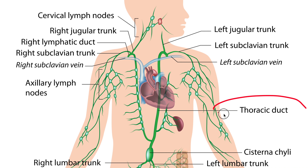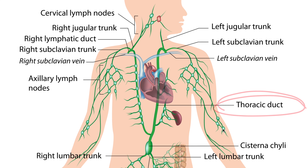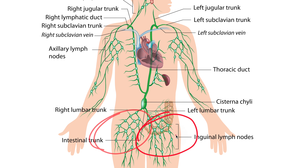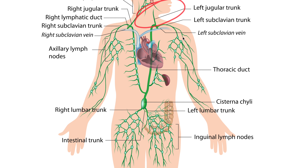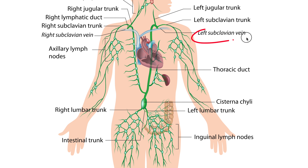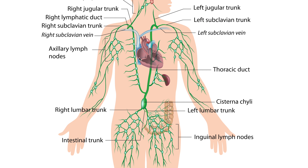Now let's take a look at the thoracic duct. The thoracic duct drains the rest of the body — the inguinal lymph nodes on both the right and left side, and the left side of the head and neck as well as the left arm. The thoracic duct then runs up and drains into the left subclavian vein, where it drains back into the heart.